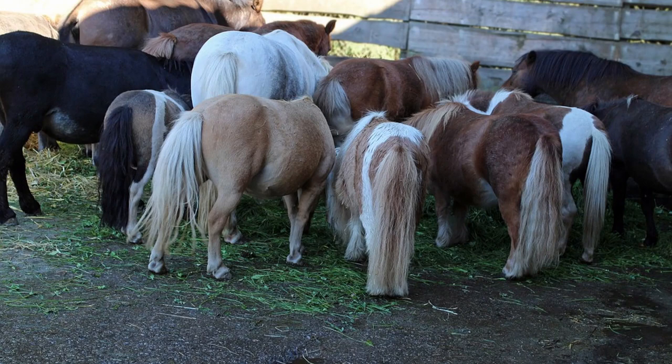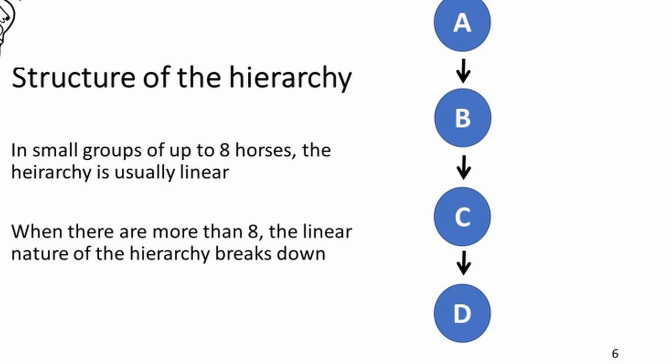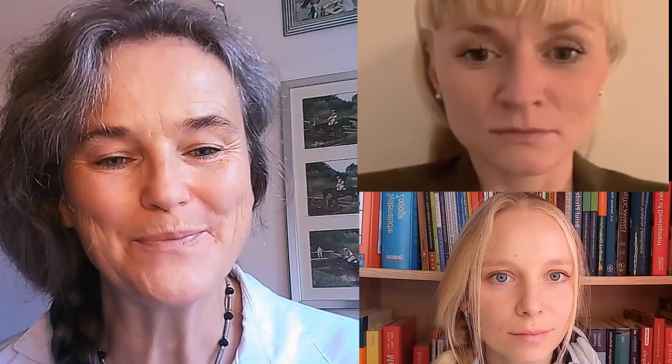Things look a bit different for the middle-ranking horses B and C. They are constantly under pressure from above, and they pass this pressure on to the horses below them. Sometimes these horses are more stressed than the lowest-ranking ones.